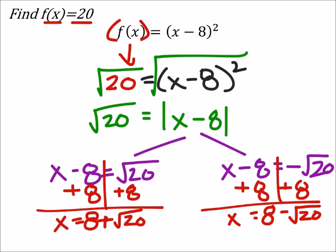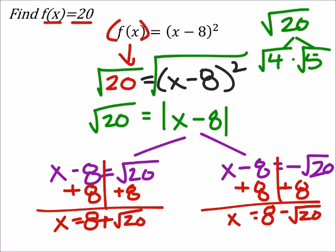But 20, we can factor that so that one of the factors is a perfect square. So I got the square root of 20, let's just take a look at that. I've got 4 and 5, so it's square root of 4 times the square root of 5. The square root of 4 is a perfect square, 2, so I got 2 times the square root of 5.